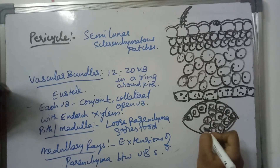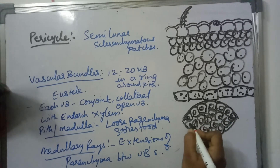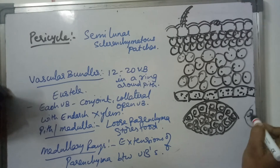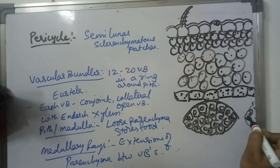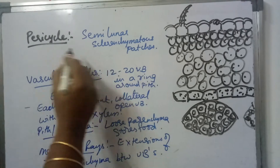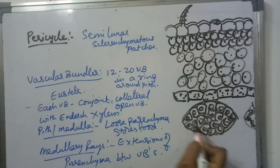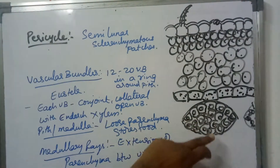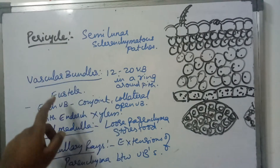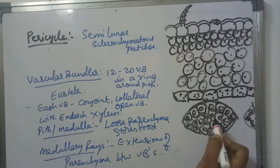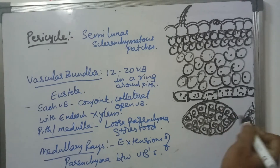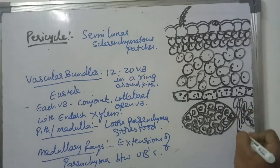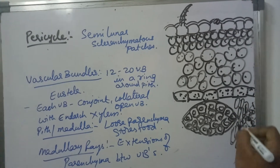The pericycle is not continuous — it is in the form of semilunar sclerenchymatous patches. In between two pericycle patches, parenchymatous extensions come through. These extensions are called medullary rays.